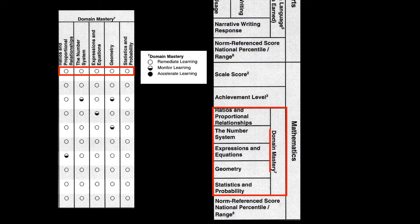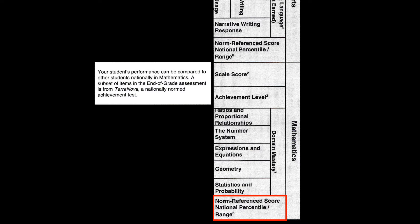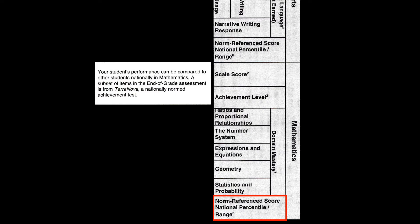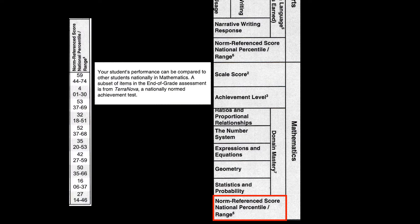When we look at the norm reference score or national percentile range, this means your student's performance can be compared to other students nationally in math. A subset of questions in the end-of-grade assessment is from Terra Nova, a nationally normed achievement test. To interpret the national percentile range, one would say this student scored in the 59th percentile, meaning out of 100 students your child scored higher than 59 others. If you see 'DNA,' the child did not attempt those questions; 'IV' means those questions were invalidated for that student.